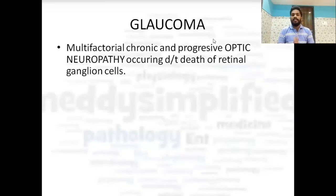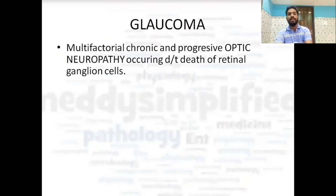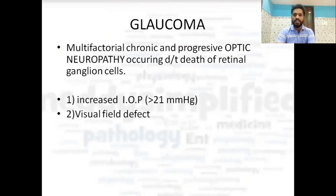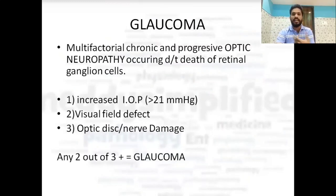Now talking about glaucoma — it is a multifactorial chronic or progressive optic neuropathy occurring due to death of retinal ganglion cells. Three parameters of glaucoma are: increased intraocular pressure (normal IOP is 10–21 mmHg, with diurnal variation), visual field defects, and optic disc or nerve damage. Any of these present leads to a glaucoma diagnosis.